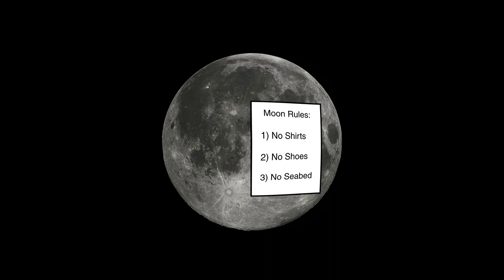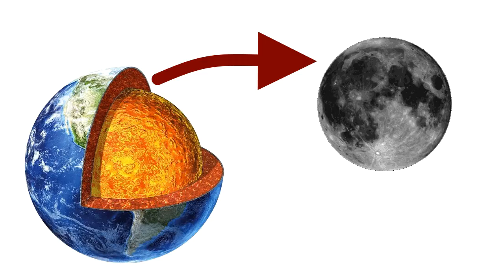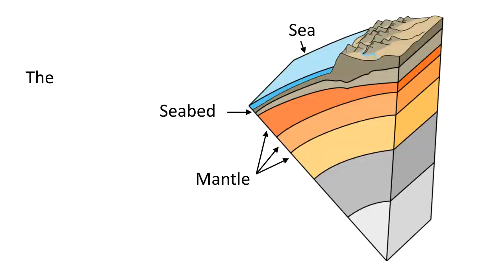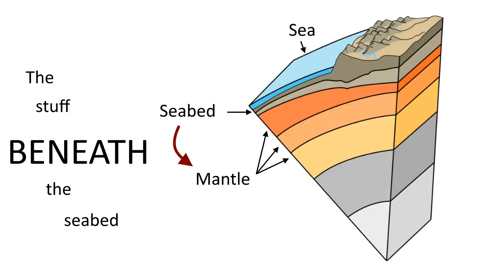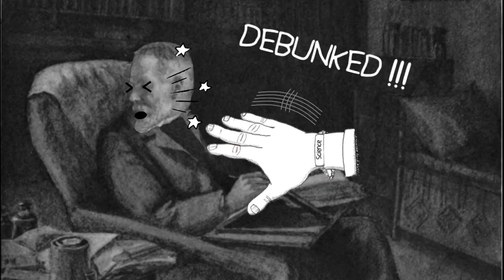There is also the fact that the moon contains no traces of the seabed, and instead bears a striking resemblance to the Earth's mantle, the stuff beneath the seabed. Sorry Darwin, but this theory is pretty much debunked.